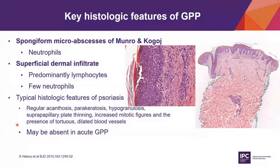Professor Johan already showed the key histology features, and in my clinical practice I found that most patients with GPP have histology characterized by spongiform micro-abscesses composed purely of neutrophils — unlike the differential diagnosis of acute generalized exanthematous pustulosis, where you can see eosinophils inside the micro-abscesses. The dermal infiltrate in GPP is usually superficial and composed predominantly of lymphocytes with few neutrophils.